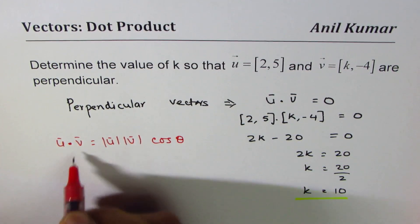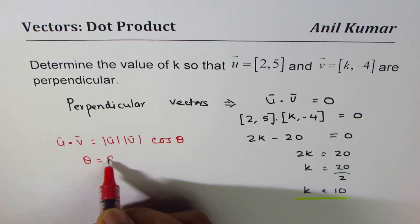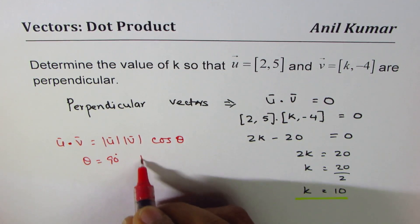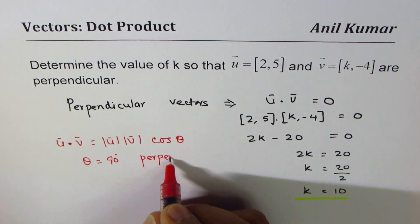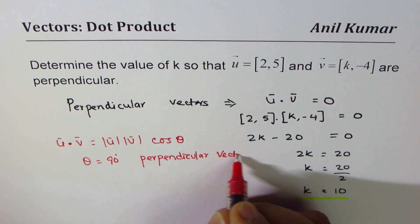The concept is if I have u dot v is magnitude of u times magnitude of v times cosine of angle between them, and for perpendicular theta is 90. So theta is 90 degrees for perpendicular vectors.